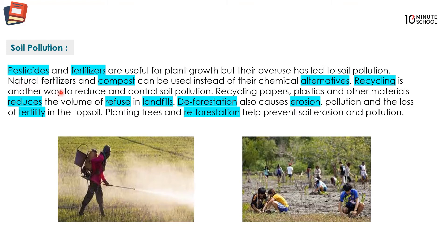Natural fertilizers and compost can be used instead of their chemical alternatives. Natural fertilizer means 'prakritik shar' and compost means 'joybo shar' — these are chemical alternatives we can use.